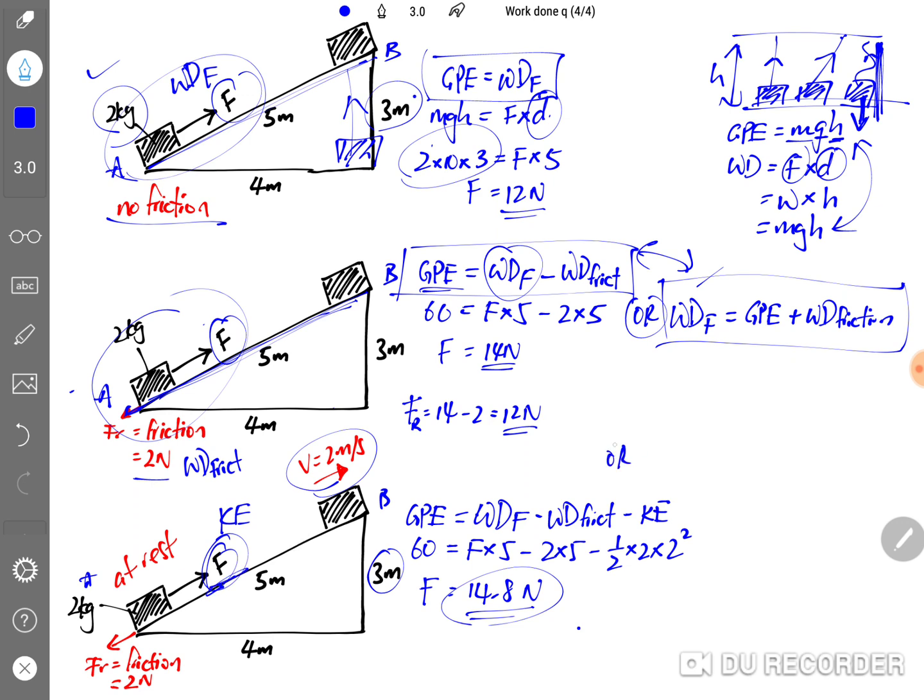Another way some of you may see this: all the energy that I put in comes in the form of work done by the pulling force, and this energy will be converted to gain in GPE plus work done against friction and plus some energy goes to the gain in KE. So if you are comfortable with this and better in seeing this way, you can because these two are the same.